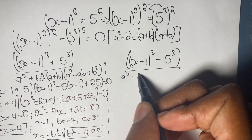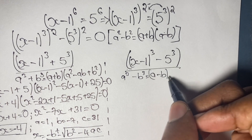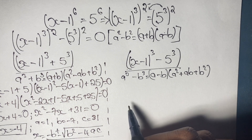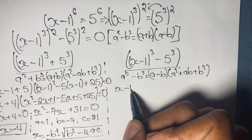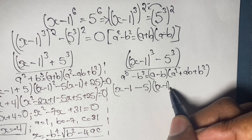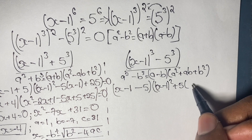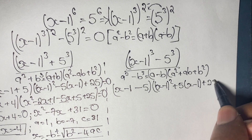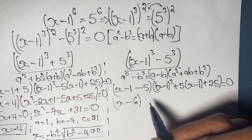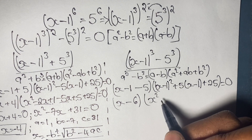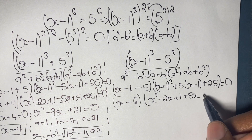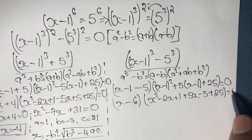Now we solve the difference of cubes factor, where (x minus 1)^3 minus 5^3 equals 0. Using a cubed minus b cubed equals (a minus b)(a squared plus ab plus b squared), we get (x minus 1 minus 5) times ((x minus 1) squared plus 5(x minus 1) plus 25) equals 0. Expanding the perfect square and simplifying gives (x minus 6) times (x squared plus 3x plus 21) equals 0.